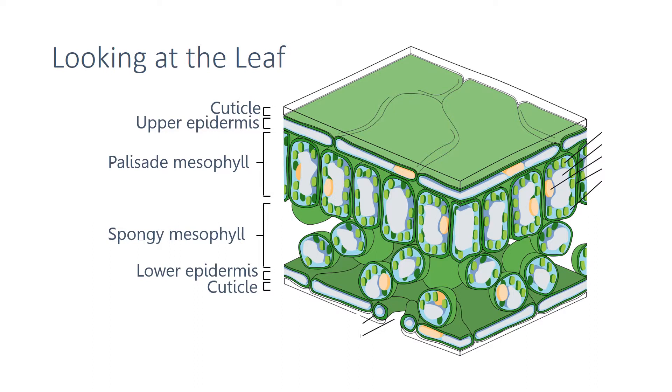As well as these tissues you can also see small gaps at the bottom of the leaf. These are stomata and guard cells around the edge allow them to open and close, allowing the plant to regulate the gas and water movement in and out of the leaf.